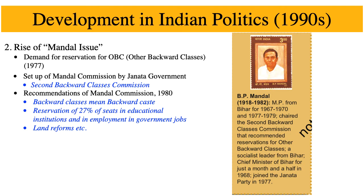The commission gave its recommendations in 1980. It advised that backward classes should mean backward castes, since they are treated similarly to Scheduled Castes and Scheduled Tribes in society. It recommended 27 percent reservation of seats in educational institutions and government jobs, along with land reforms. However, by the time the report was presented, the Janata government had already fallen and the recommendations could not be implemented.